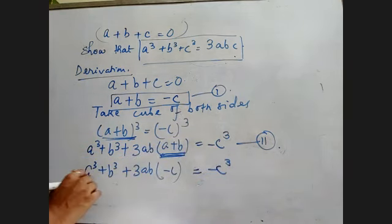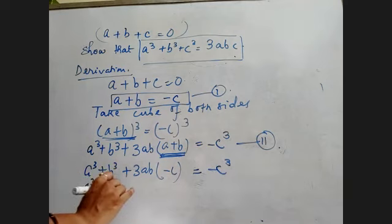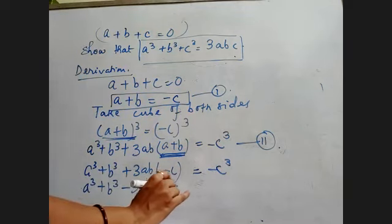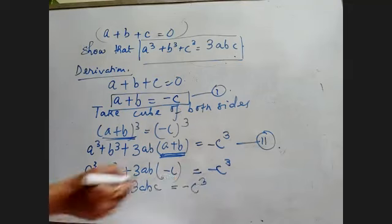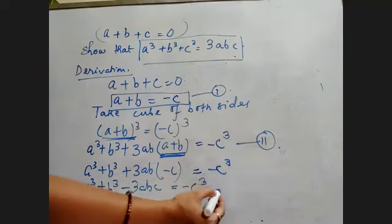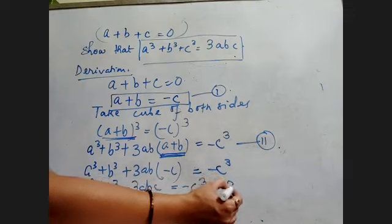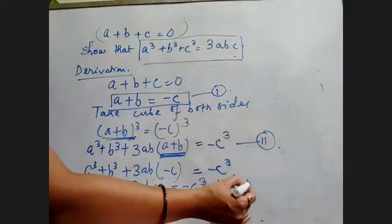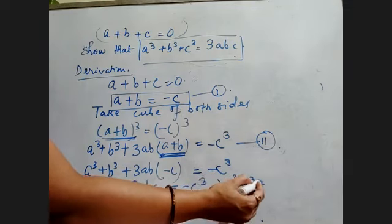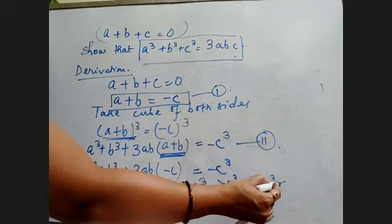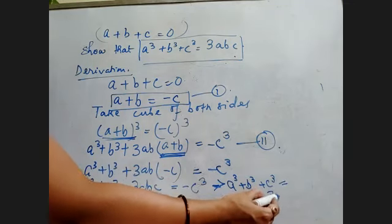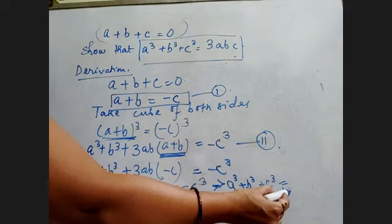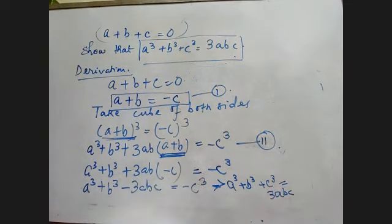So ultimately what are you getting? That's a³ + b³ + 3ab(a + b). If you don't keep in bracket (-c), then we will get the wrong answer. So it becomes a³ + b³ - 3abc = -c³. Now you can interchange the positions and ultimately what are you getting? a³ + b³ + c³ = 3abc. Done.